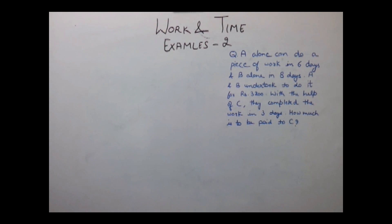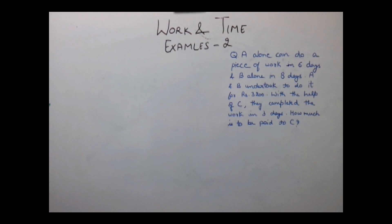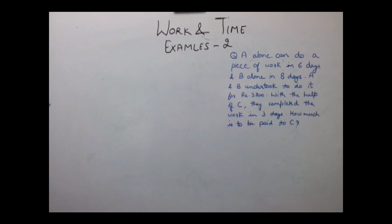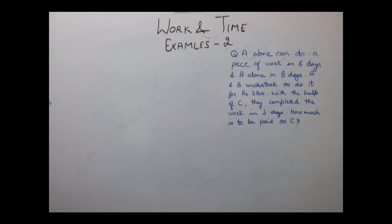First example is: A alone can do a piece of work in 6 days and B alone in 8 days. A and B undertook to do it for Rs.3200. With the help of C, they completed the work in 3 days. How much is to be paid to C?